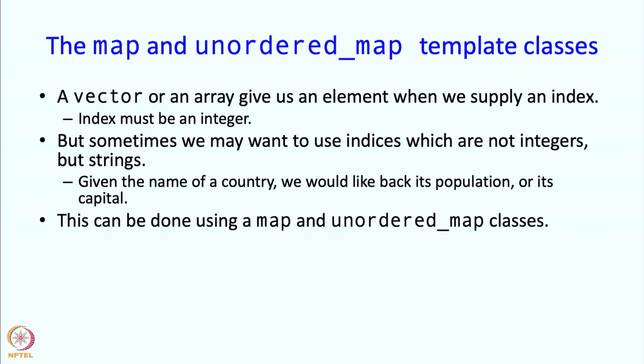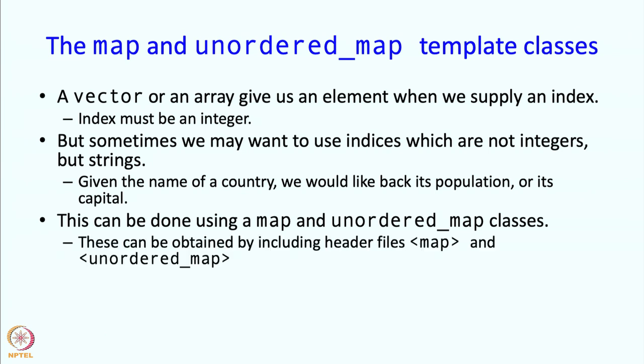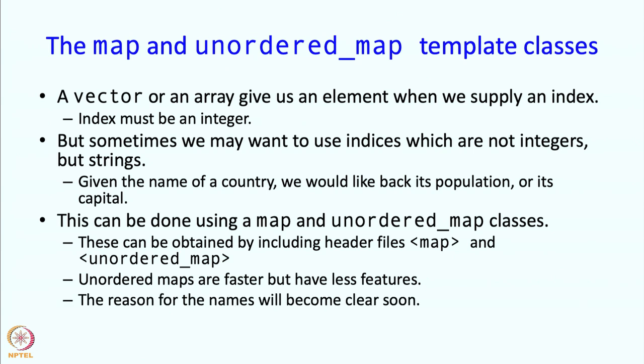This is exactly what maps or unordered maps can do. These can be obtained by using header files map and unordered_map. Unordered maps are faster but have some fewer features. If you do not need those features you should really use unordered maps because they are faster. The reason for these names will become clear soon.